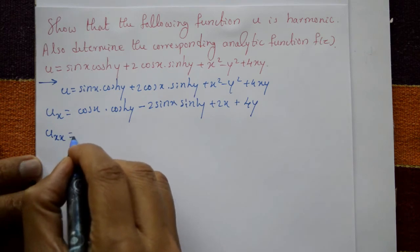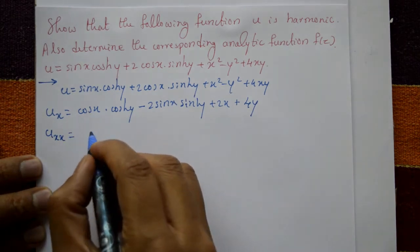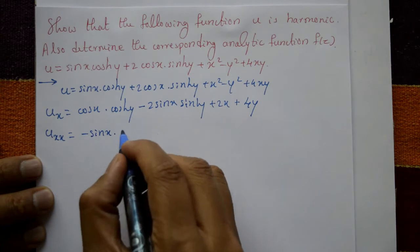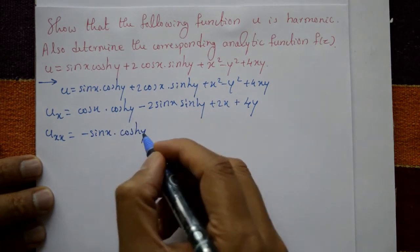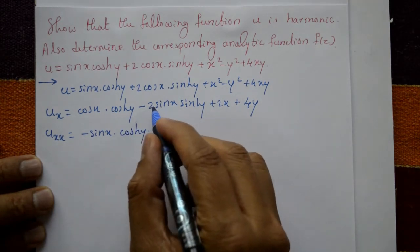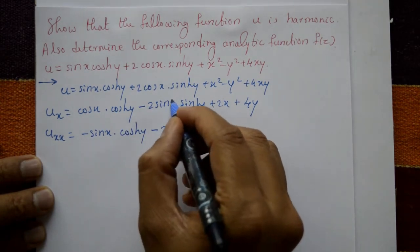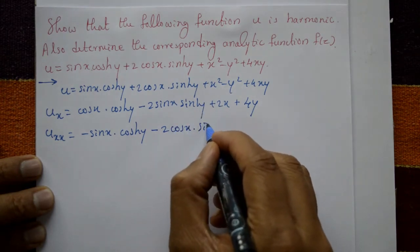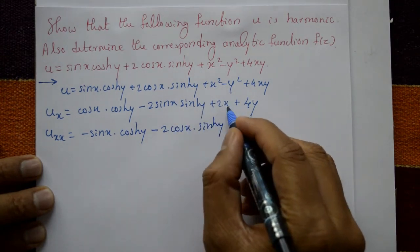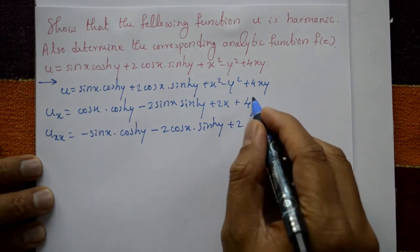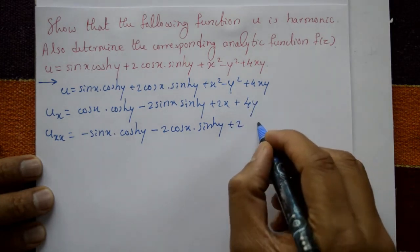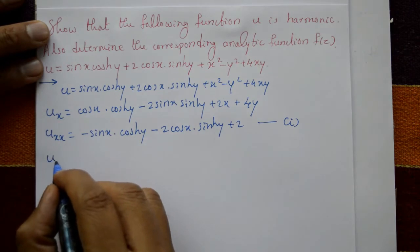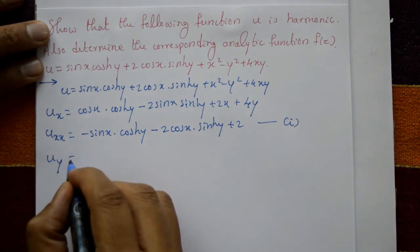Again differentiate with respect to x once more: this gives minus sin(x)·cosh(y) — cosh(y) is constant — minus 2·cos(x)·sinh(y) — sinh(y) is constant — plus 2, and this is 0. This is called equation number one.